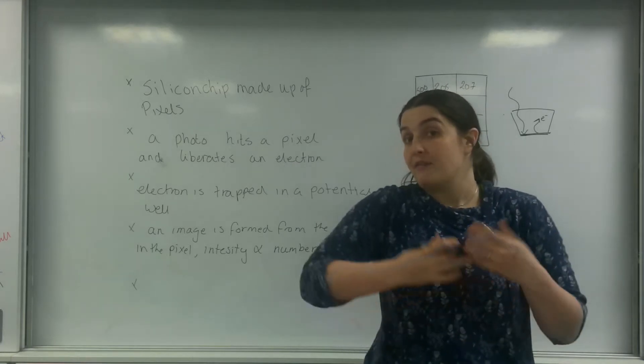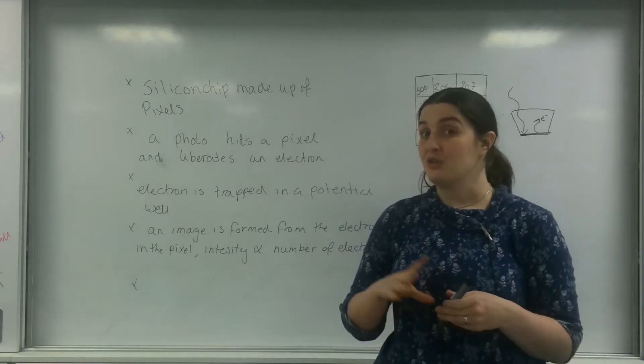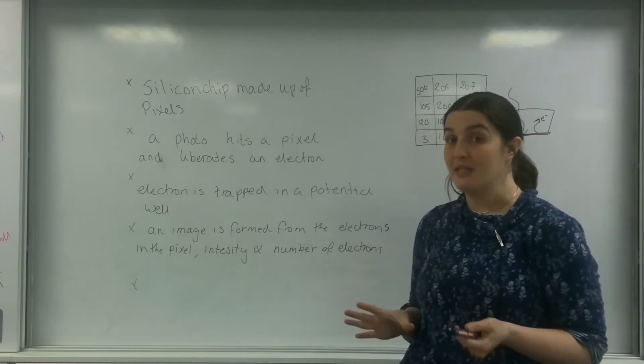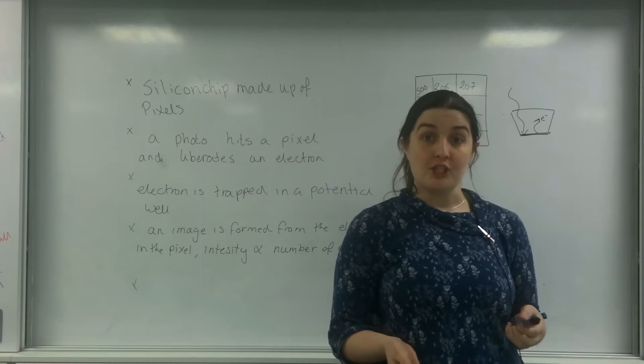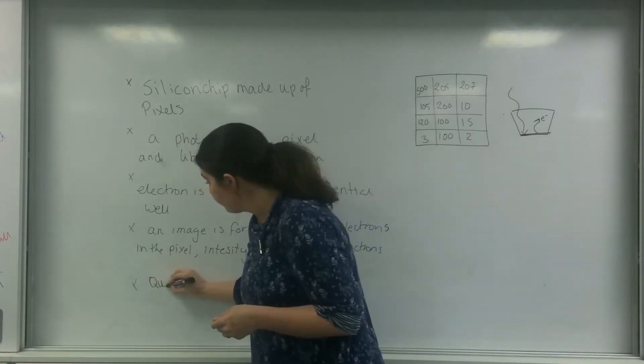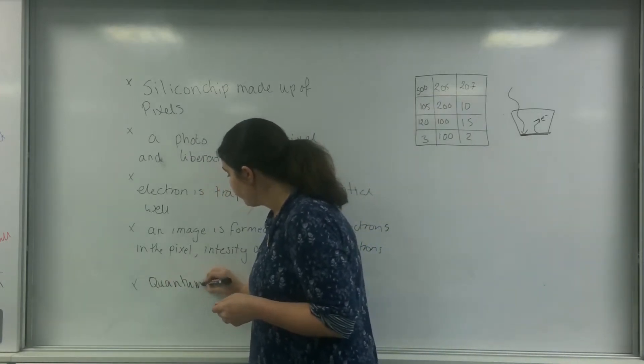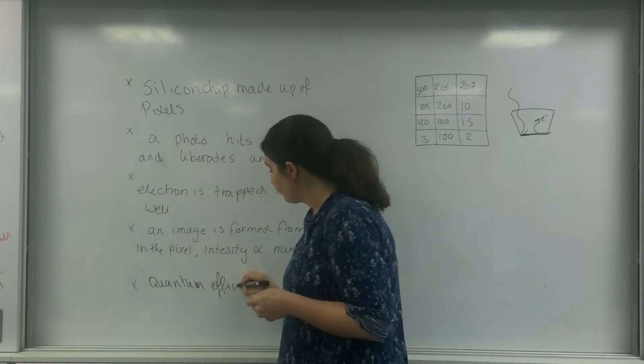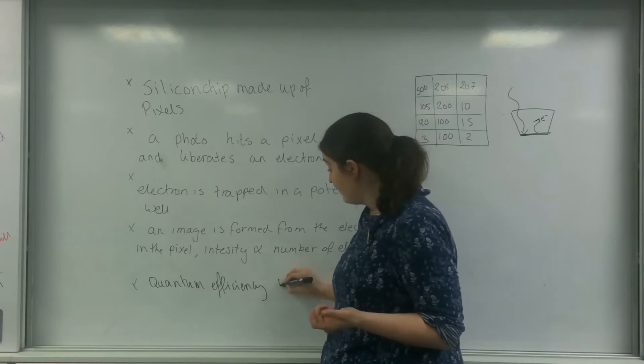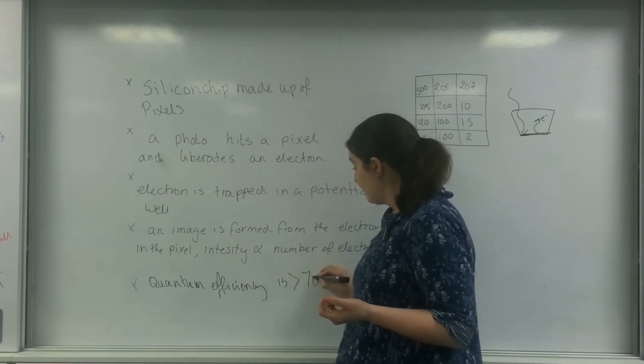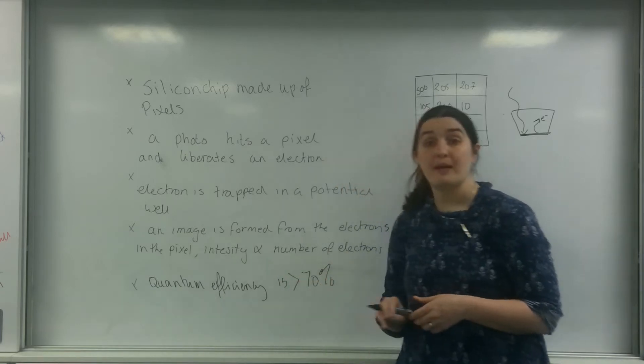This is actually quite interesting because my eye, unlike my eye, which for evolutionary purposes is actually trying to make sure I don't get overloaded, a CCD can actually be quite efficient. The quantum efficiency can be around about 70%, and in some cases higher.